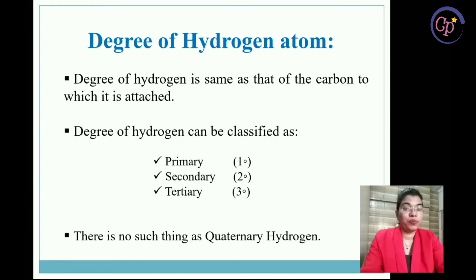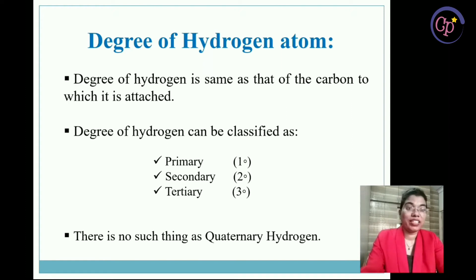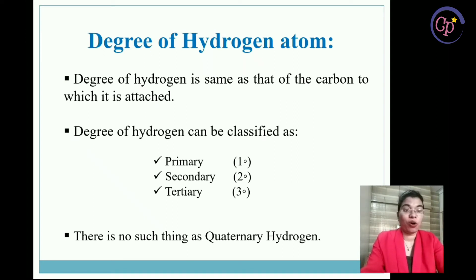Now we shall see how to find out the degree of a hydrogen atom. The degree of hydrogen is the same as that of the carbon to which it is attached. So whatever is the degree of the carbon atom will be the same for the hydrogen atom attached to it. The degree of hydrogen is classified as primary or one degree, secondary or two degree, and tertiary or three degree.